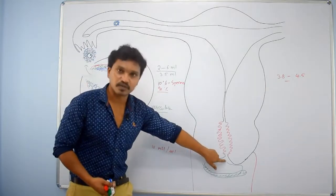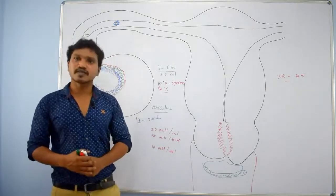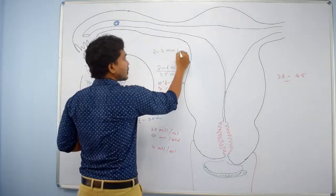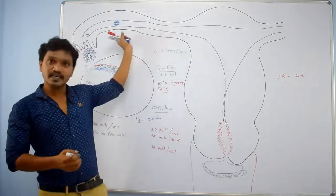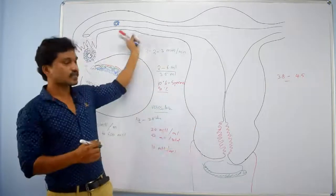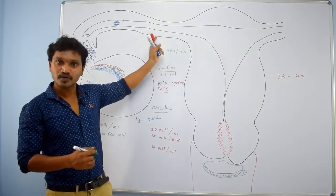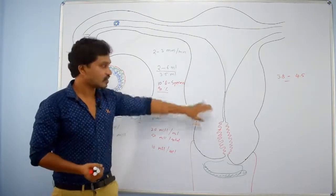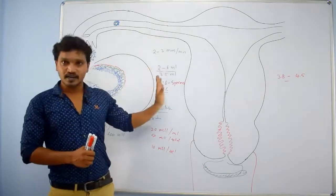The sperms start travelling through the female reproductive tract at about 2 to 3 mm per minute. Their lifespan is 2 days. At this speed alone, they cannot reach the site of fertilization in time — so mechanical support is needed. These mechanical events occur in the uterus and fallopian tube.